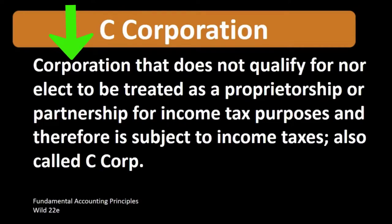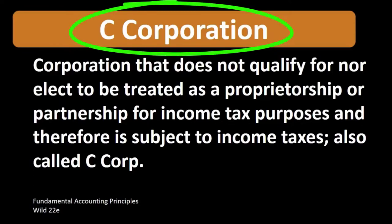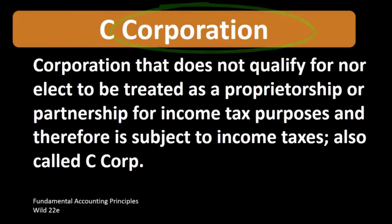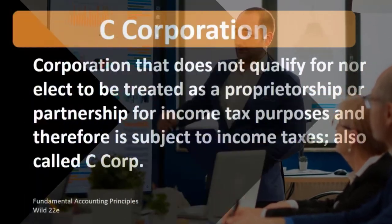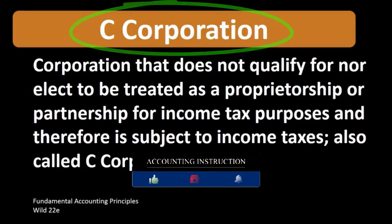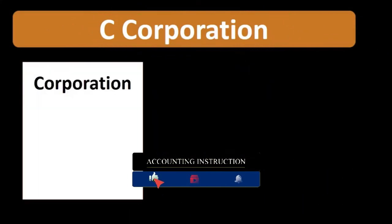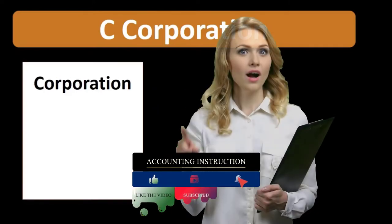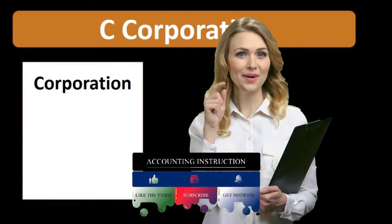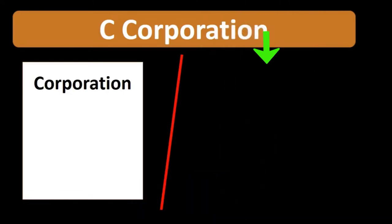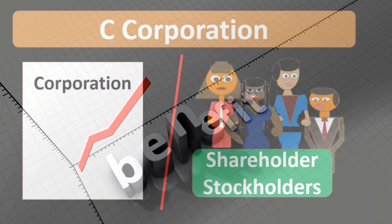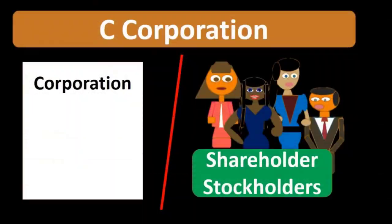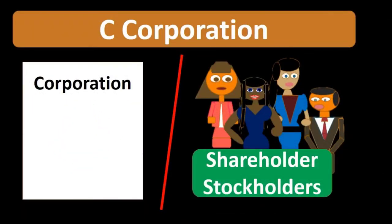A C corporation is generally going to be the default. In other words, if we set up a corporation, then typically it will be a C corporation unless set up otherwise. Let's take a look at an example. The idea of the corporation itself is that the corporation will be a separate legal entity from the shareholders — a huge benefit.